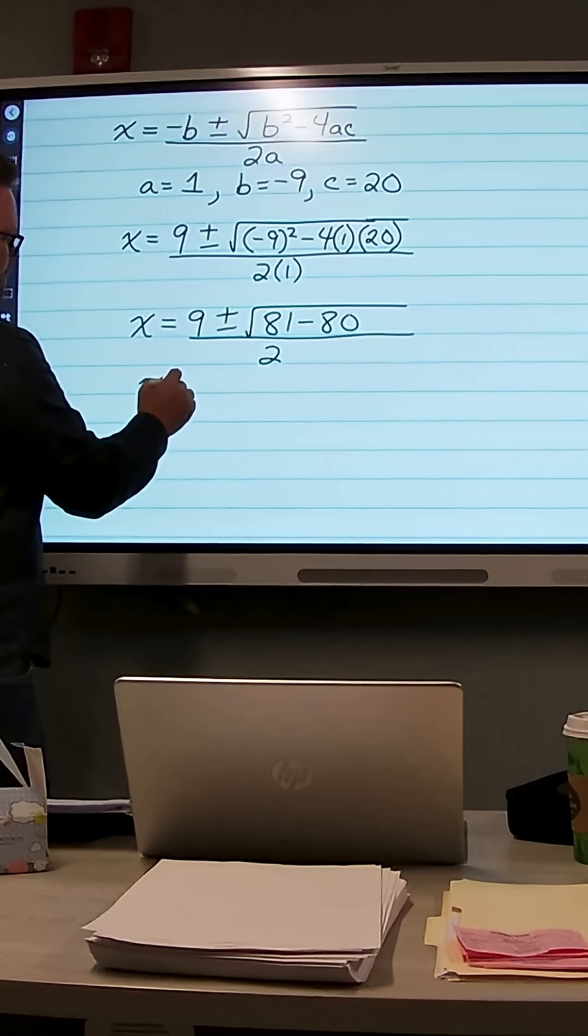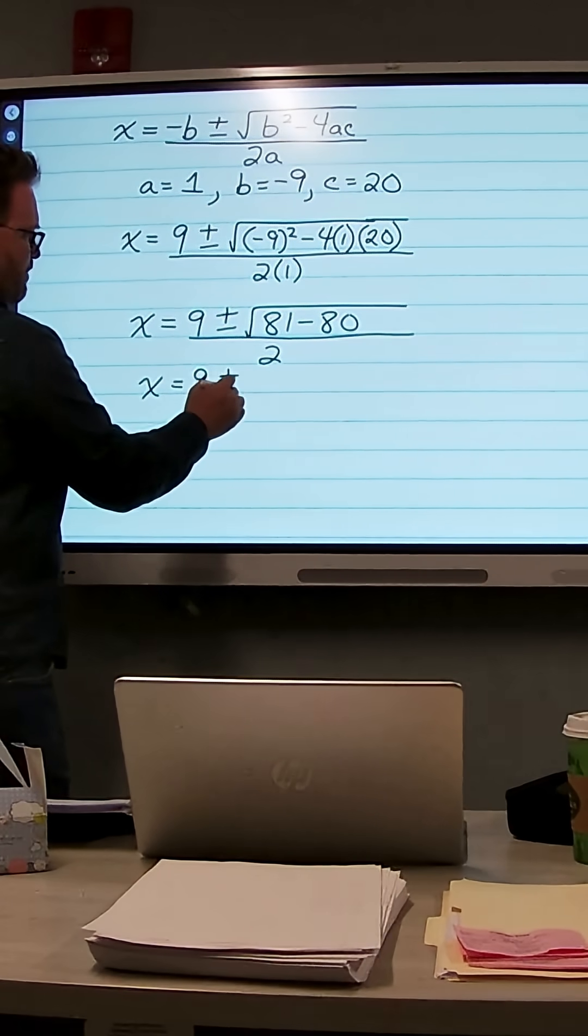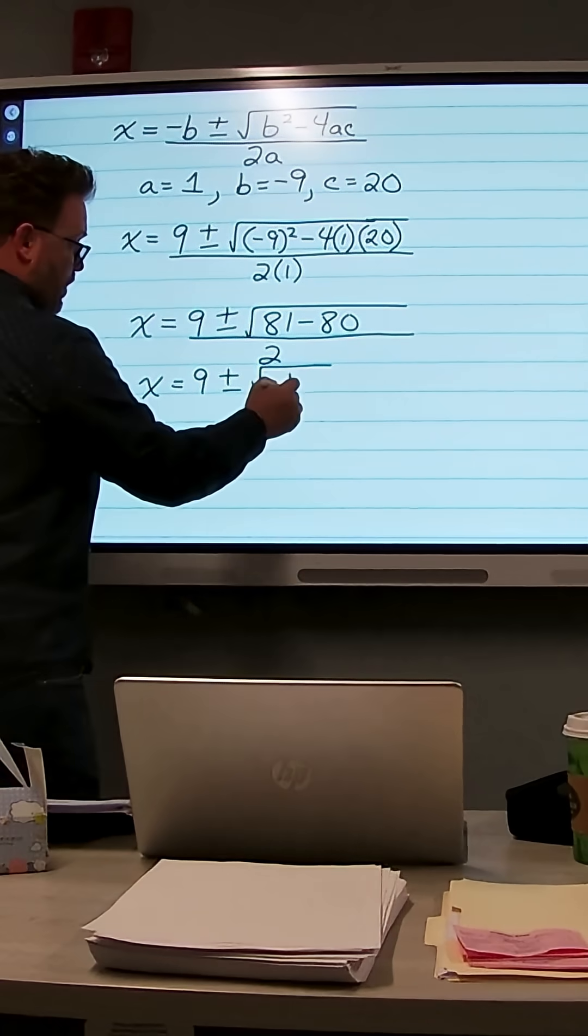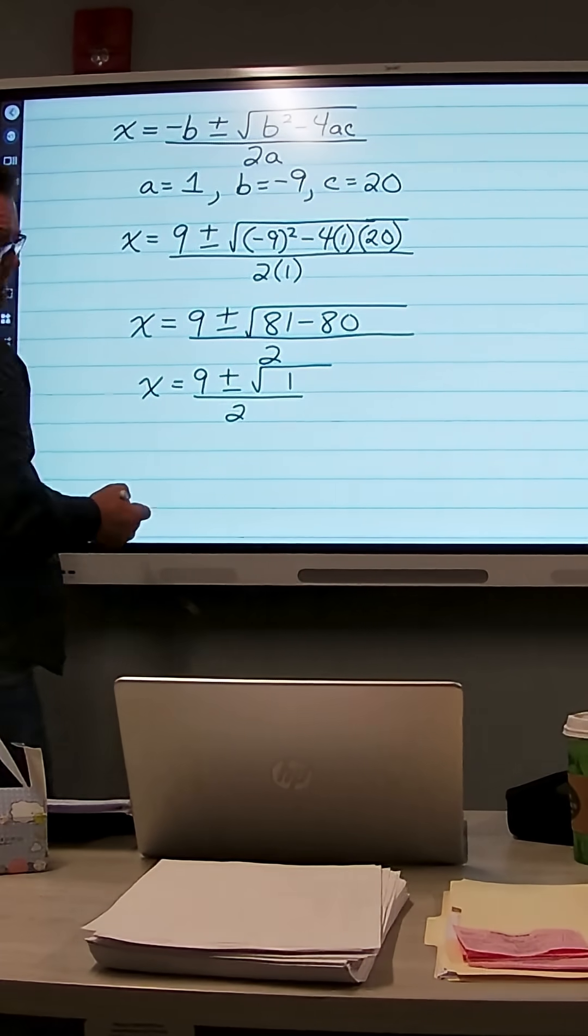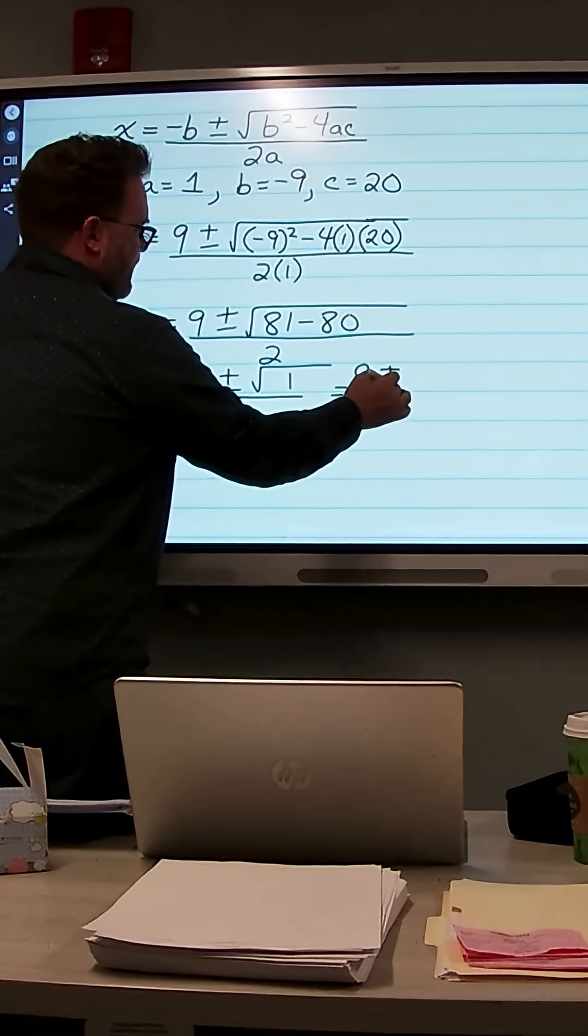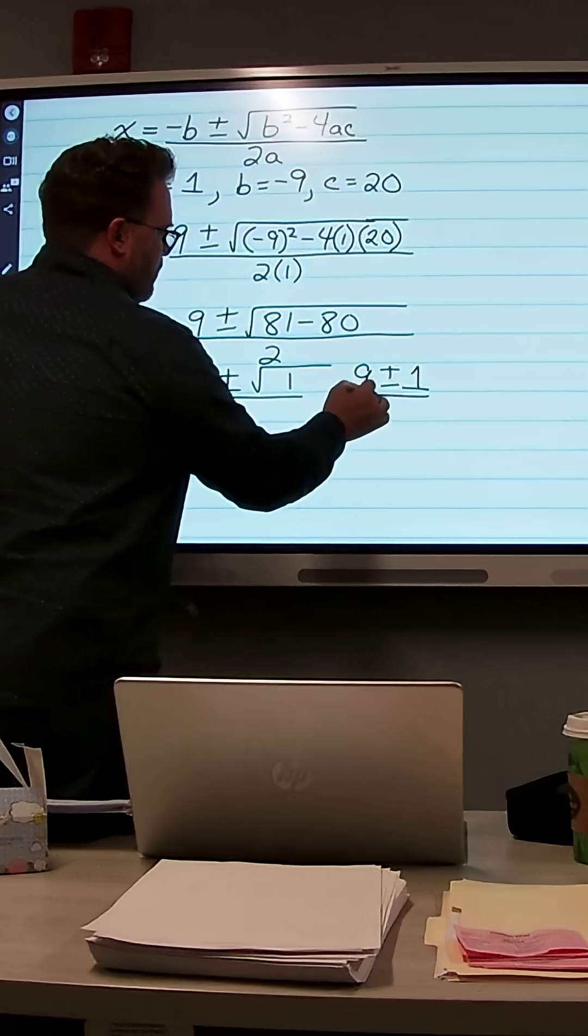We get x equals 9 plus or minus the square root of 81 minus 80, which is 1, all over 2. The square root of 1 is 1. So this becomes 9 plus or minus 1 over 2.